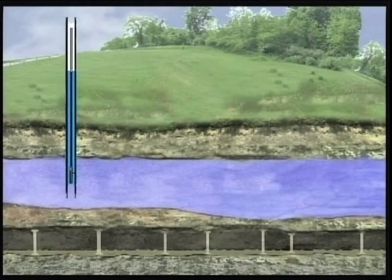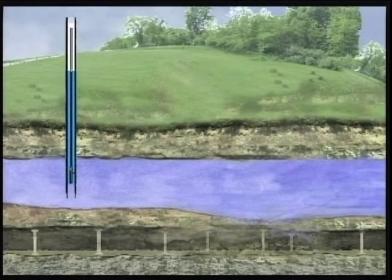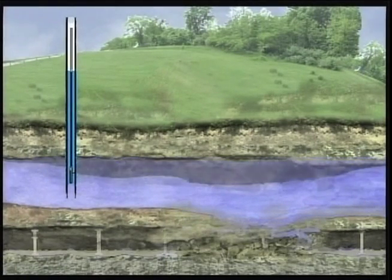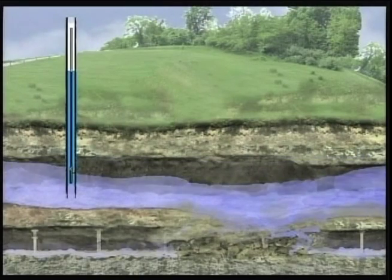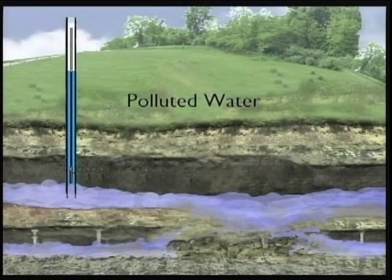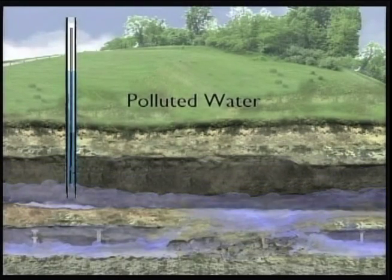In addition, when a deep mine collapses, it can fracture aquifers and damage private wells, reducing the quantity and quality of drinking water in the area.